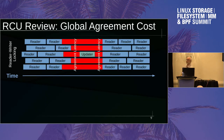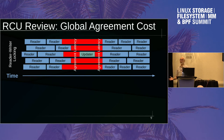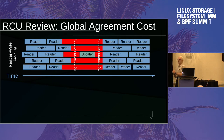This is the global agreement cost graphically for reader-writer lock. The updater has to wait for the readers to finish. It takes time for that to propagate across the machine. And once the updater finishes, it takes time to propagate that information to allow readers to continue — creating that big red blob in the middle of lost time.